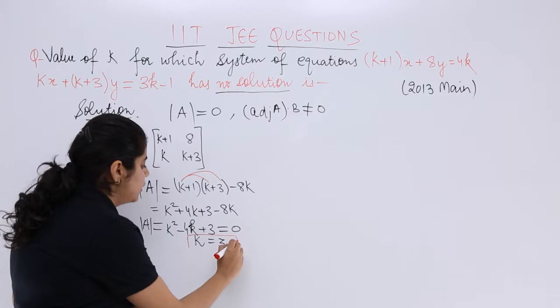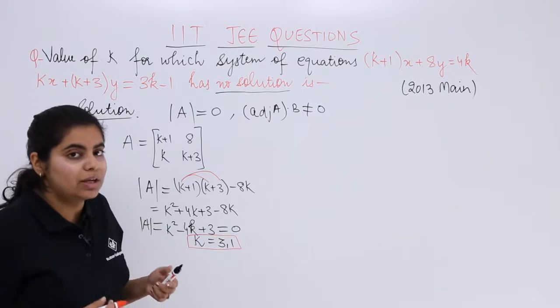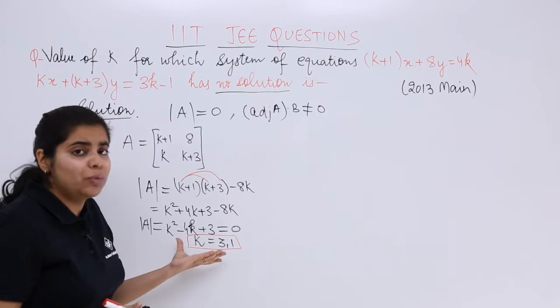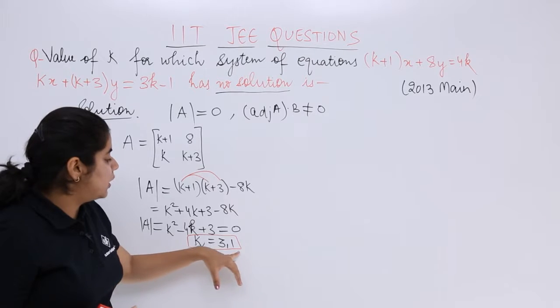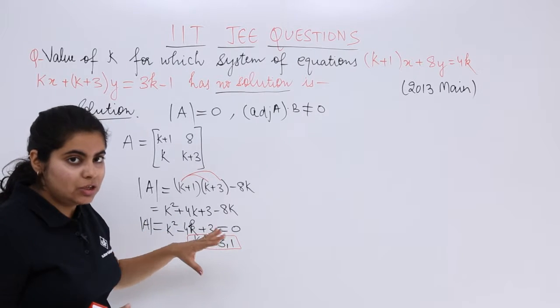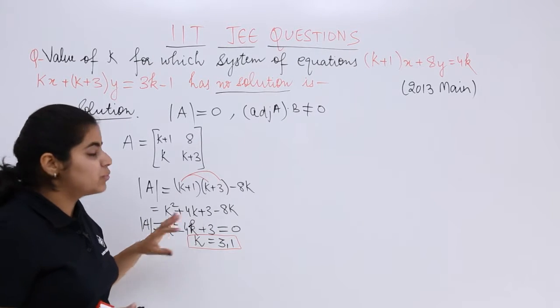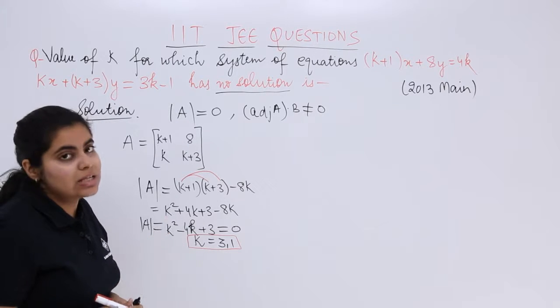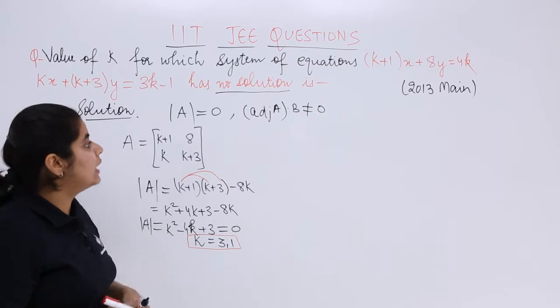So it is possible when k is 3 and 1. There are 2 roots to this equation. I go by simple product and sum of roots. The product of roots is c/A which is 3×1 = 3. The sum of roots is 4. The roots are k=1 and k=3.